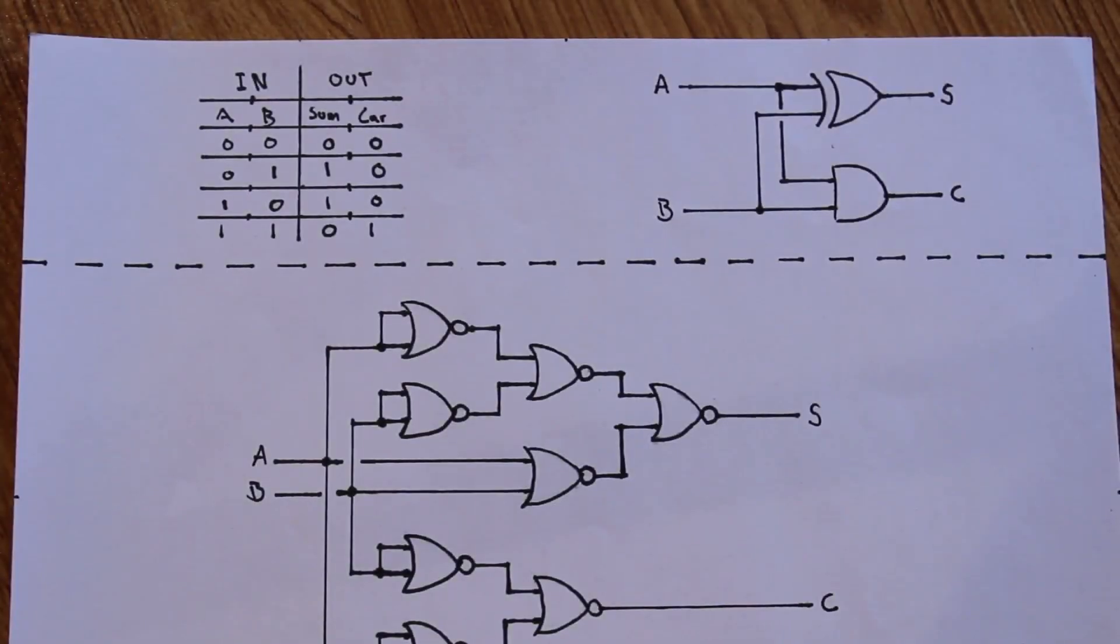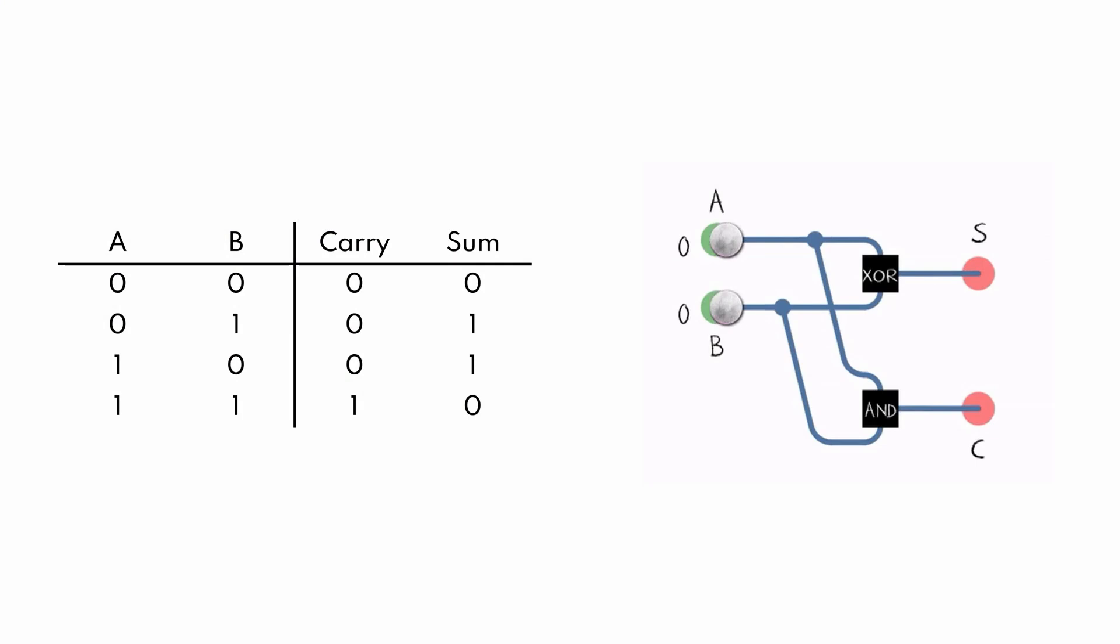Before we jump straight into just building the full adder, let's take a step back and take a look at what we're trying to accomplish with a full adder. And actually I think it'll be easier if we go one step further back and take a look at what a half adder is. A half adder takes two one-bit inputs, adds them together, and gives us a two-bit output.